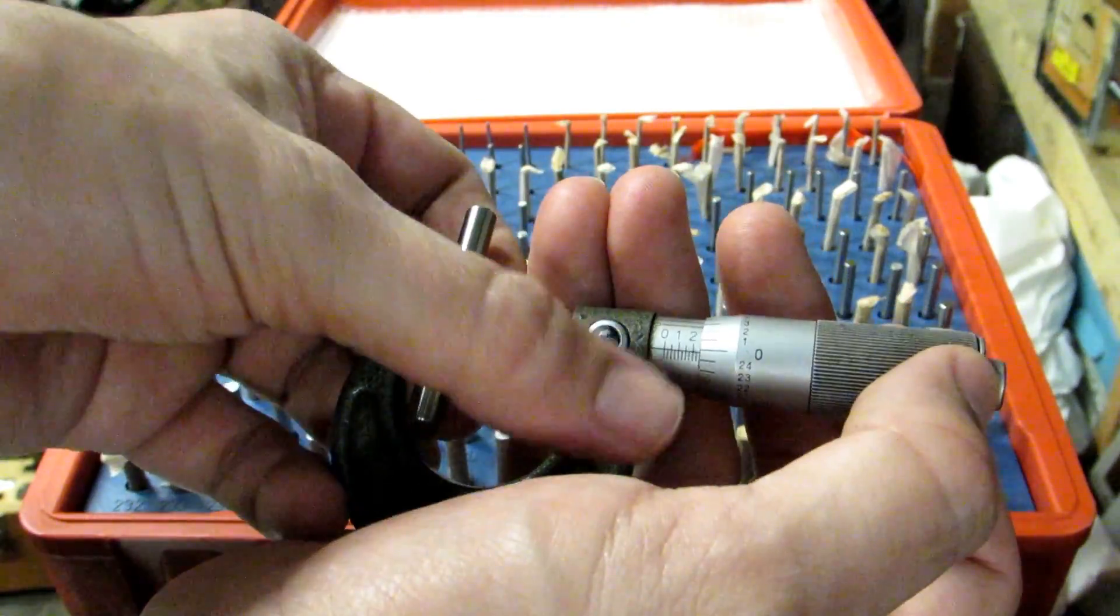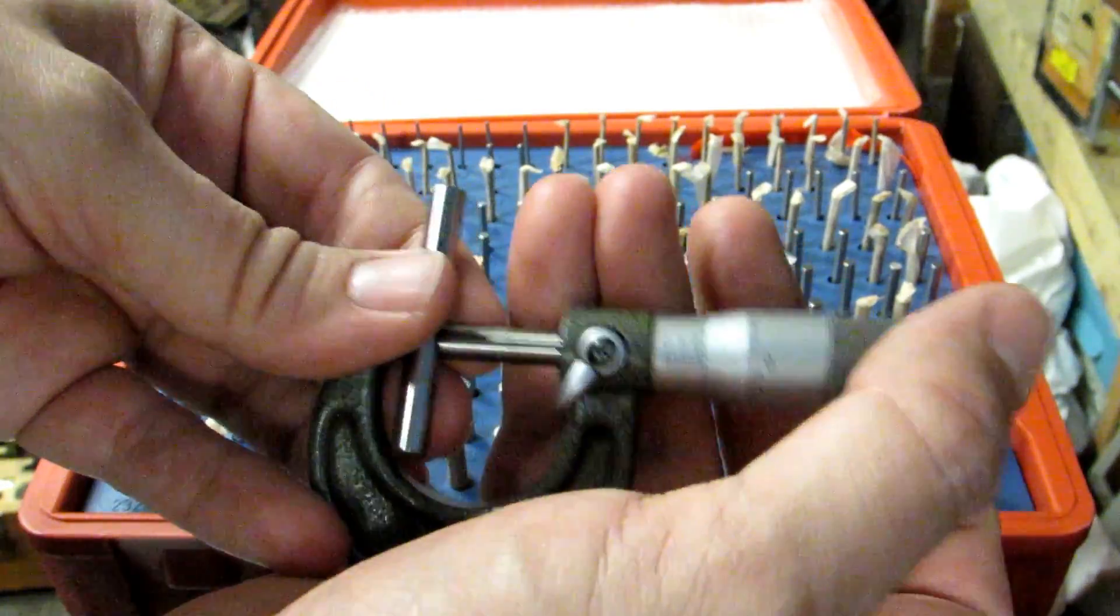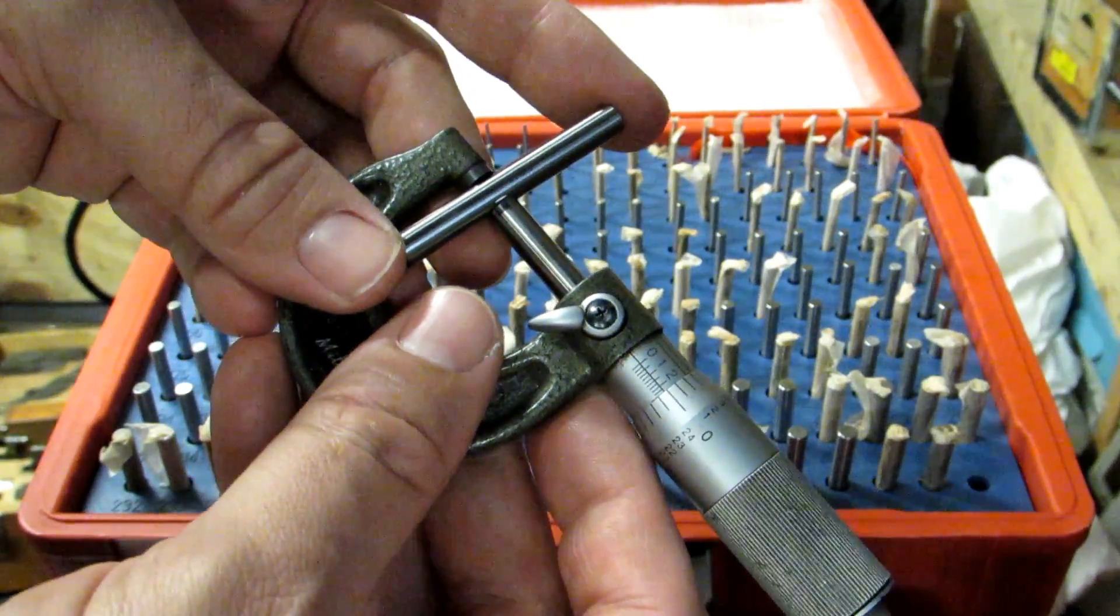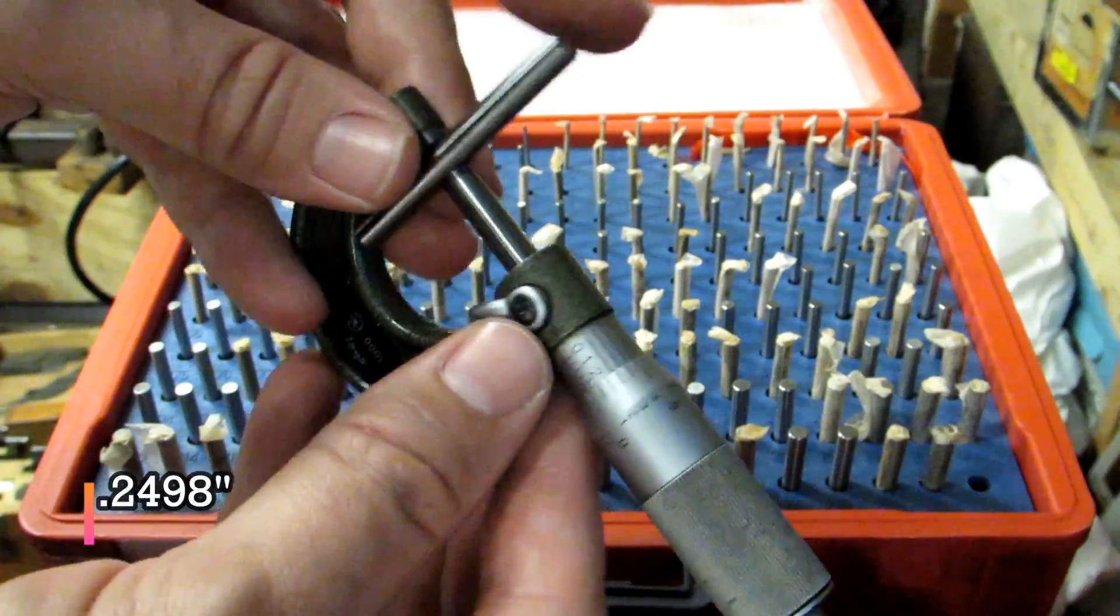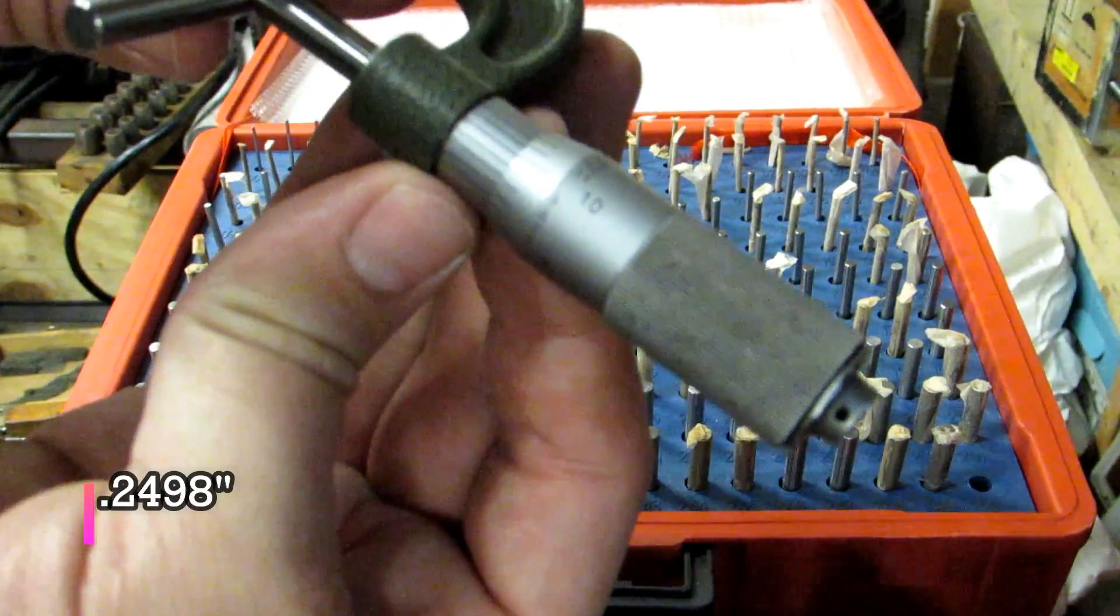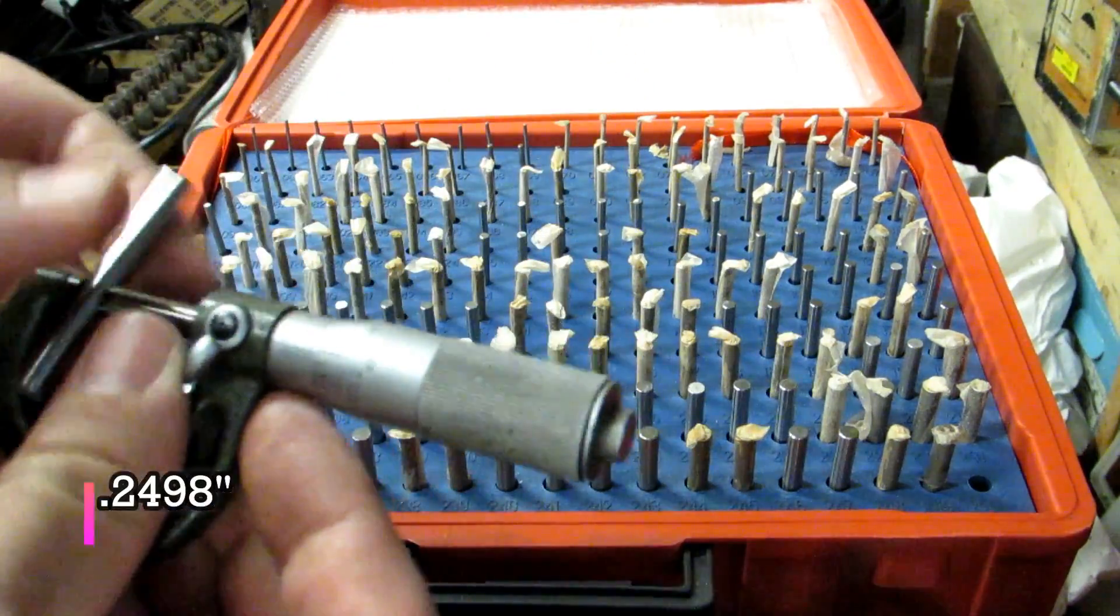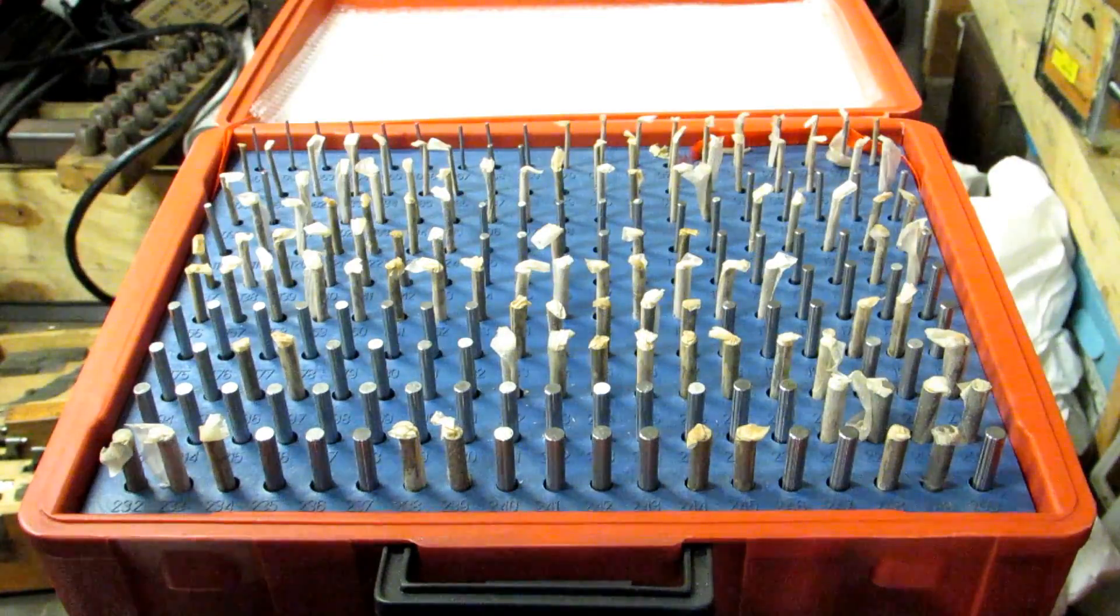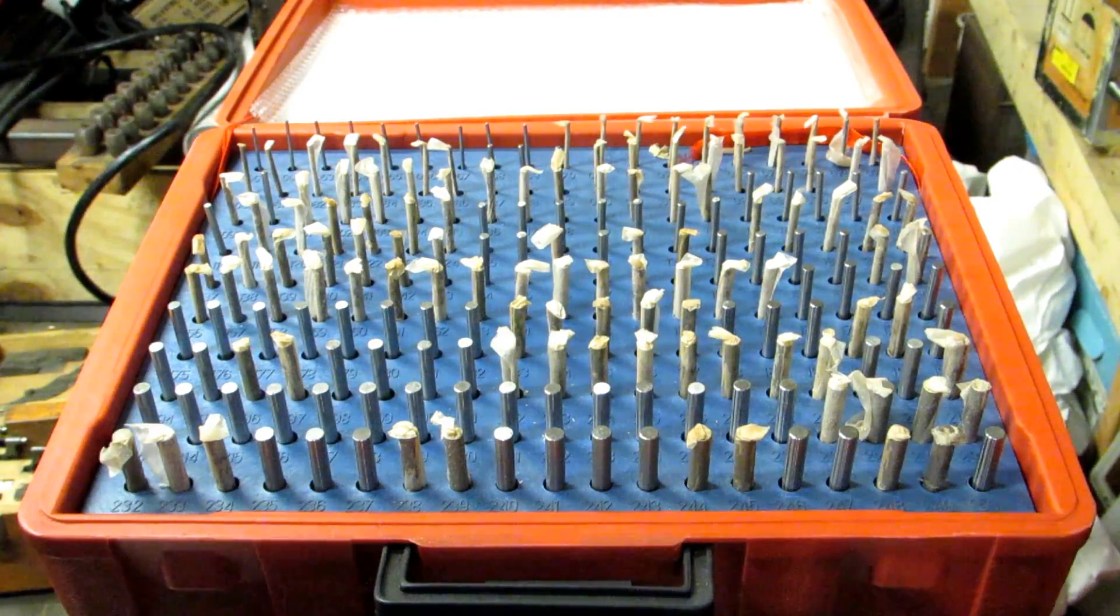Now you do have to keep in mind that this is a minus pin set, so my micrometer reading should actually be 249.8 and it is right on the money. So my micrometer is good to measure for whatever 250 thousandths dimensions I might have.